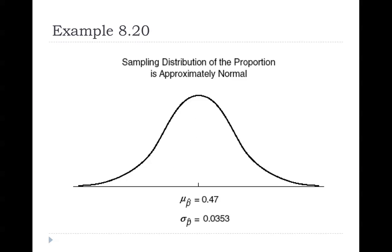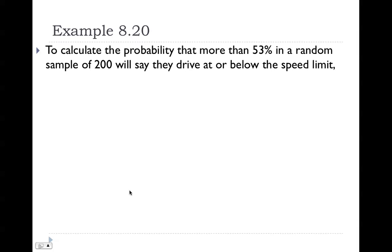Let's look at our bell curve. In the center we have the mean of the sampling distribution of proportions and the standard error — 0.47 and 0.0353. The values that make up the horizontal axis are sample proportions. A sample proportion greater than 0.47 falls to the right, and one less than 0.47 falls to the left. The question asks for more than 53%, which means p̂ equals 0.53.